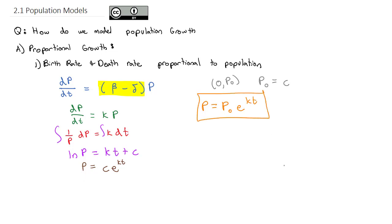What's interesting about that is we've seen it before — that is continuous exponential growth. We saw it in finance with continuous growth on your investment, where our final investment was equal to the initial investment times e to the interest rate times time, where the interest rate was that constant. It also works for population growth as well.